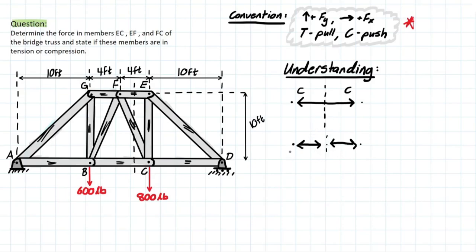So, what are the tricks to understanding method of sections? Well, the first trick is going to be that we do not exceed more than three members when we're cutting. So, no more than three members when cutting.